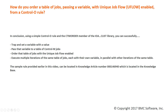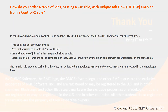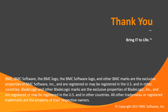So in conclusion, using a simple Control-O rule and the CTM Order member of the IOA CLIST library, you can successfully trap and set a variable with a value, pass that variable to a table of Control-M jobs, order that table of jobs with unique job flow enabled, and execute multiple iterations of the same table of jobs, each with their own variable, in parallel with other iterations of the same table. The sample rule provided in this video can be located in knowledge article number 000146940 in the knowledge base. Thank you very much for your time. Have a good day.